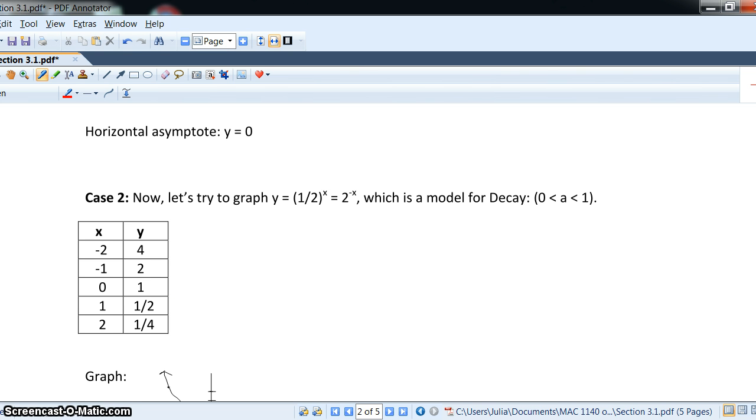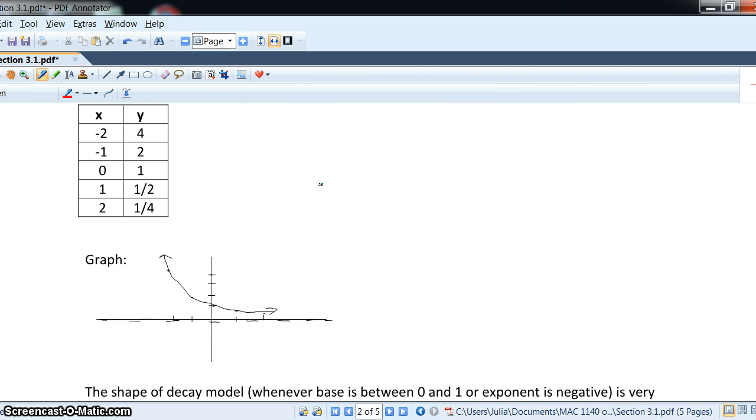And notice, the values have the opposite effect. So, this function, when we're reading left to right, is actually decreasing. The same characteristics are true, but this is an example of a decreasing or dying off function.